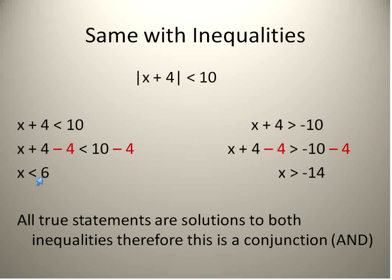Because x can be less than 6 and also greater than negative 14. If both of these statements were not true or they couldn't be true at the same time, then it would be a disjunction and we would separate it with or. So when we're solving absolute value inequalities, they're either going to be a conjunction if they both can be true at the same time, or it will be a disjunction if they both are absolutely not connected at all.